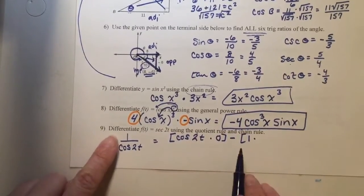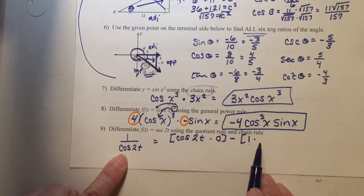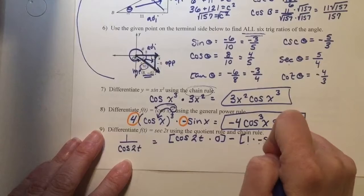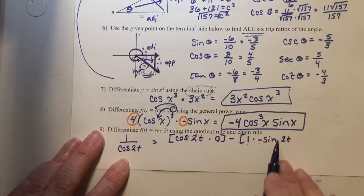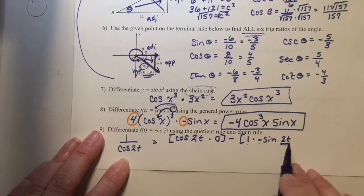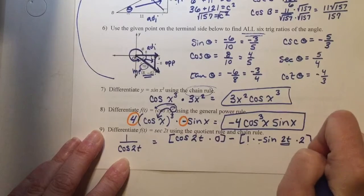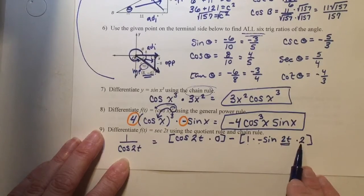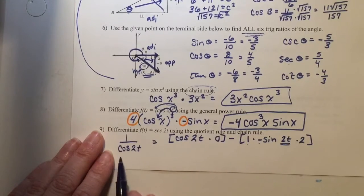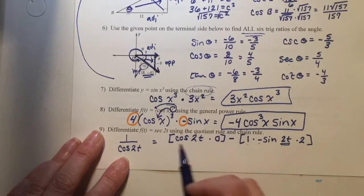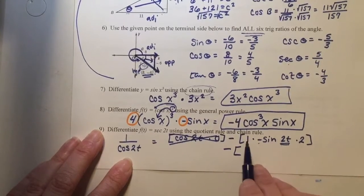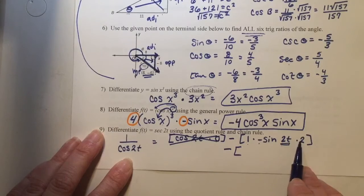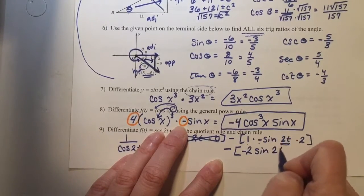Quotient rule: you minus, then keep the top the same — it's a 1 — times the derivative of the bottom. The derivative of a cosine is a negative sine; you keep the 2t the same. But because this is more than just a single variable, I have to find the derivative of 2t and multiply by that — the derivative of 2t is 2. Simplifying the top: cosine of 2t times 0 is 0. So this is minus 1 times negative 1 times 2, which is negative 2 times the sine of 2t. Negative times negative is positive, so on the top I have 2 times the sine of 2t.